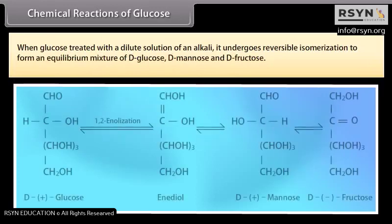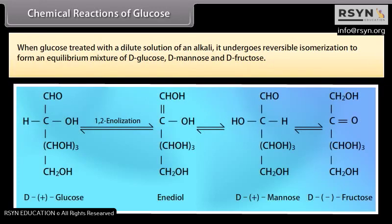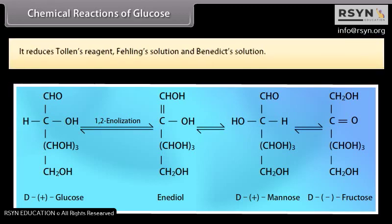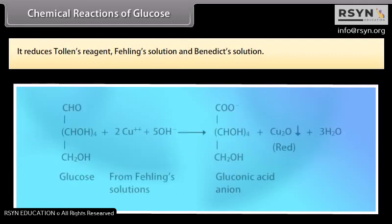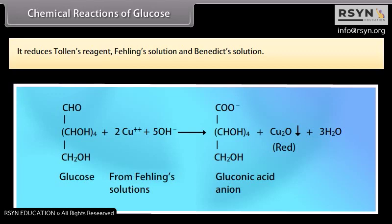When glucose is treated with a dilute solution of an alkali, it undergoes reversible isomerization to form an equilibrium mixture of D-glucose, D-mannose and D-fructose. It reduces Tollens' reagent, Fehling's solution, and Benedict's solution.